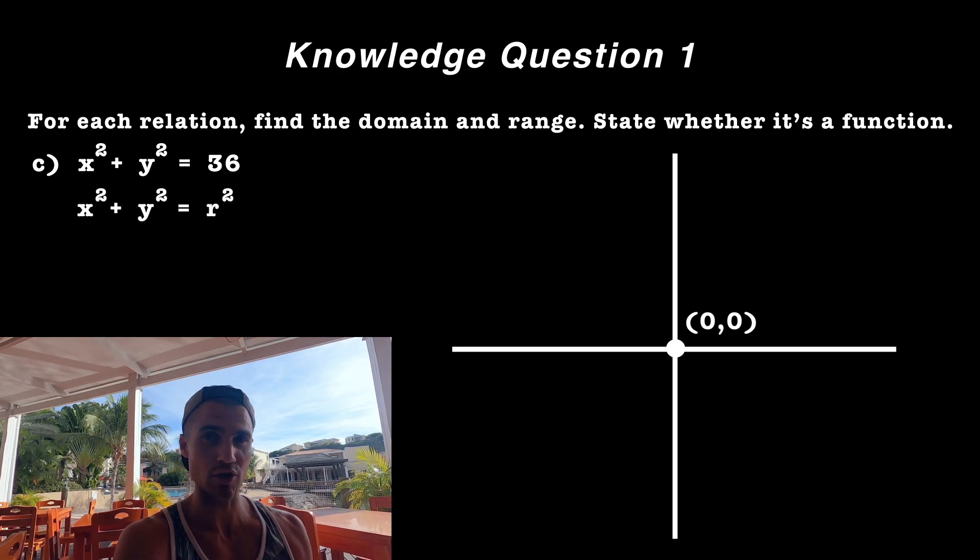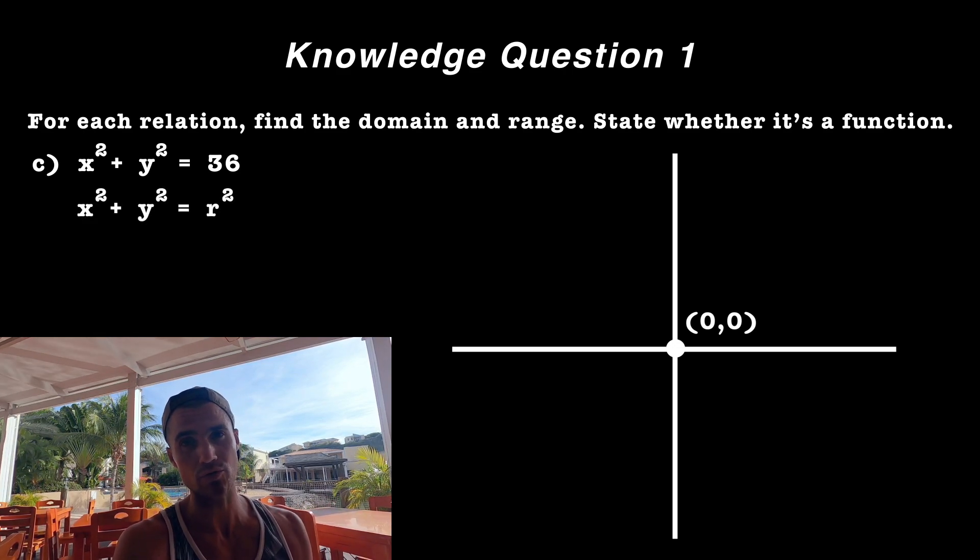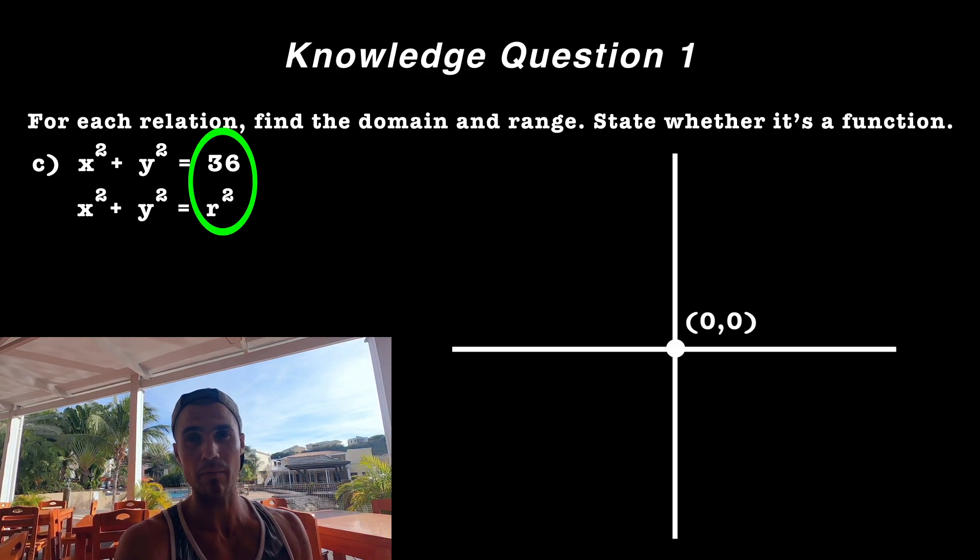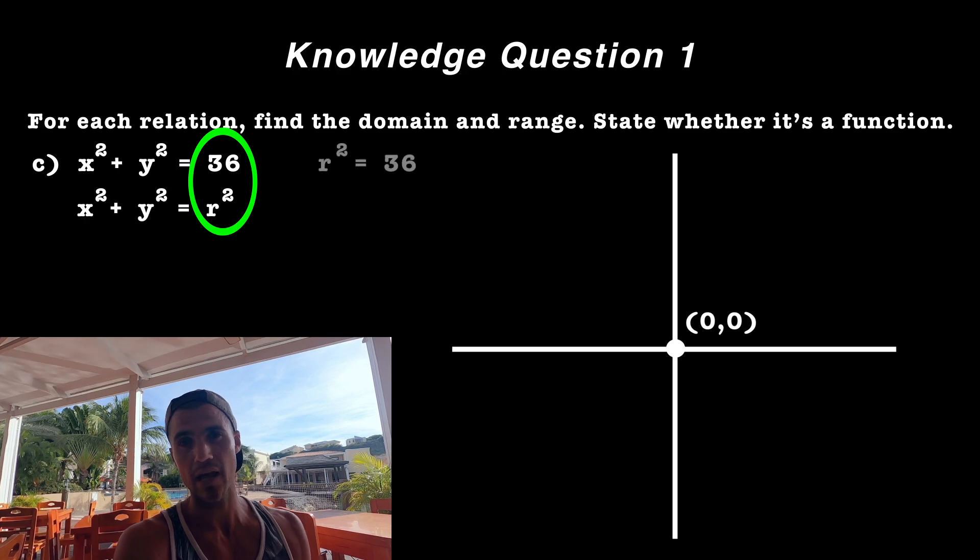Remember a standard circle, the equation of it is x squared plus y squared is equal to r squared. And so we could find the radius of this by taking the r squared, making it equal to 36, square root both sides, radius ends up being six.